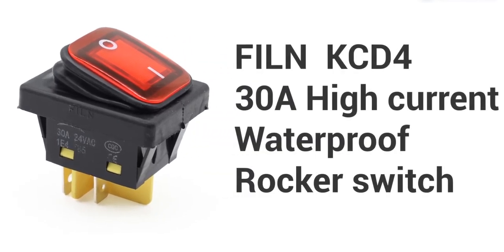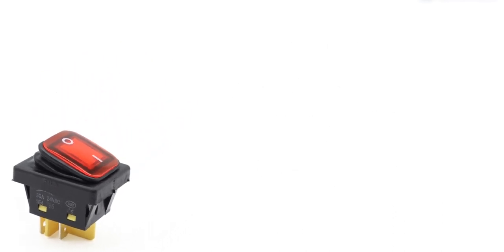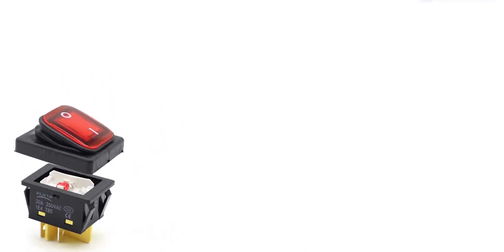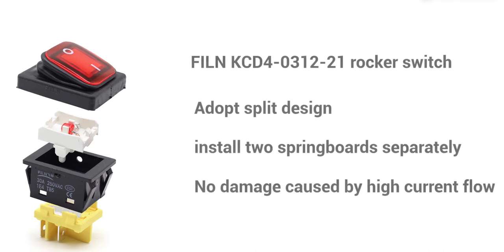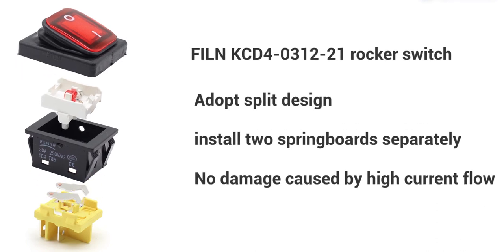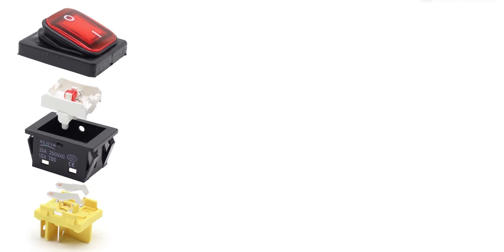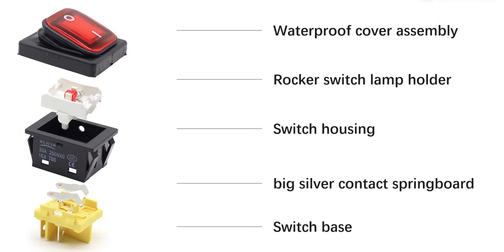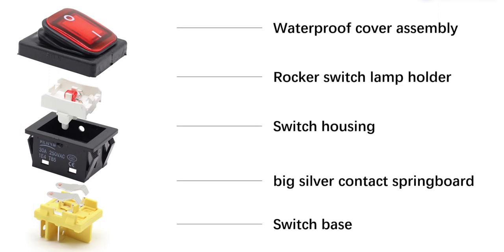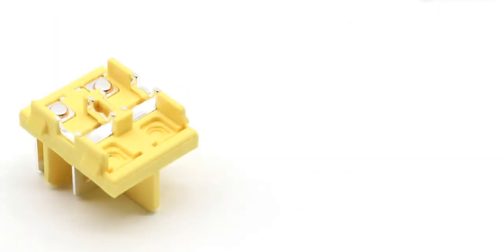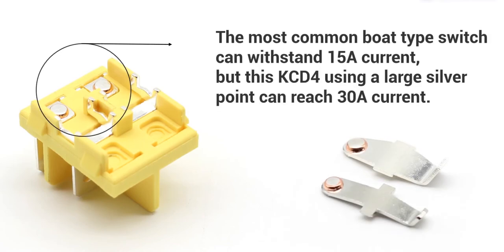Here's why this rocker switch can reach a high current of 30A. First, it uses a new type of split design that truly separates the two inner springboards, so the switch will not be directly damaged due to excessive current during use. All accessories have been inspected and qualified. The most common boat-type switch can withstand 15A current, but this KCD4 using large silver contacts can reach 30A.